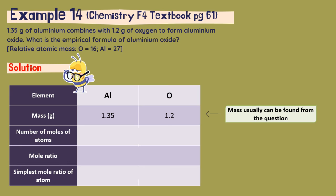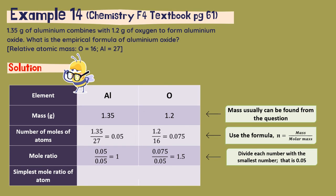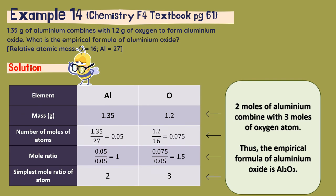Next, to find the number of moles of atoms, we use the formula n = mass / molar mass. To find the number of moles of aluminium, we use 1.35 grams divided by the relative atomic mass of aluminium, which is 27, giving us 0.05 moles. For oxygen, 1.2 divided by 16 gives us 0.05 moles. Next, for the molar ratio, we divide the number of moles by the smallest number of moles, which is 0.05 in this question. Lastly, to find the simplest mole ratio, we multiply by a suitable number to get a whole number. In conclusion, 2 moles of aluminium combine with 3 moles of oxygen atoms. Thus, the empirical formula of aluminium oxide is Al2O3.